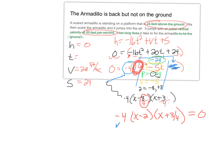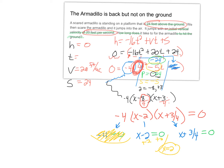Pulling pieces apart: negative 4 equals zero — discard. x minus 2 equals zero gives x equals 2 seconds — valid positive answer. x plus 3/4 equals zero gives x equals negative 3/4 — that means the armadillo jumped three-fourths of a second before it landed, which doesn't make sense, so we throw that away. Final answer: it takes the armadillo 2 seconds to hit the ground.